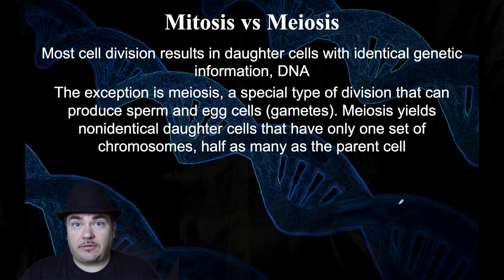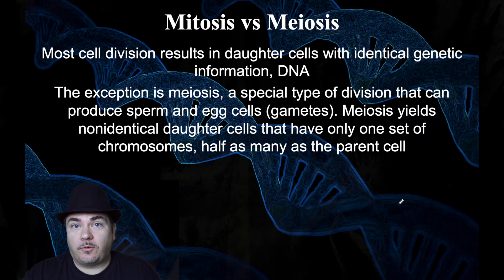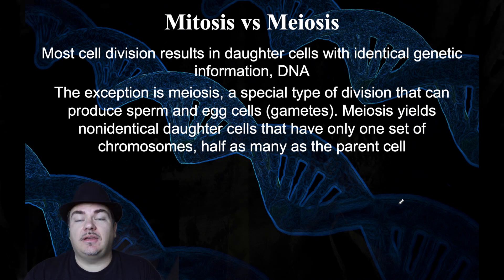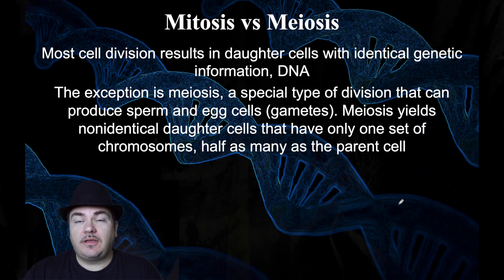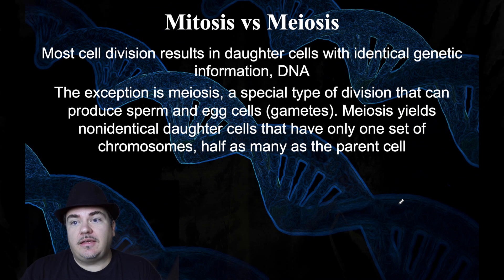To do cell division, there are two different ways you can do it. One is called mitosis and the other is called meiosis. In this first series of four video lectures, we're going to talk about mitosis. In the next series after this one, we're going to learn about meiosis. But I'm going to briefly introduce you to meiosis today, even though we're going to focus on mitosis.